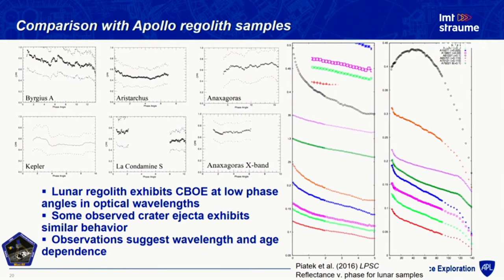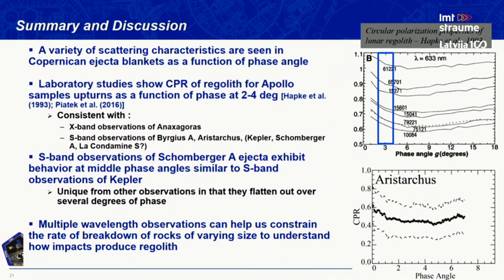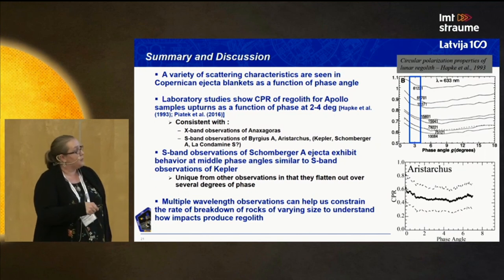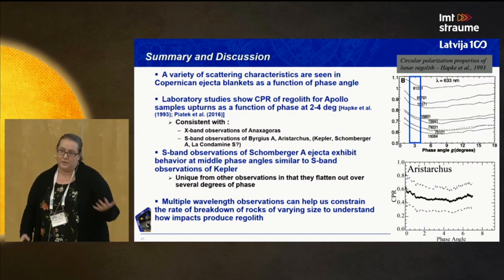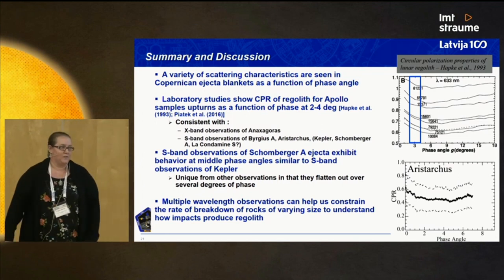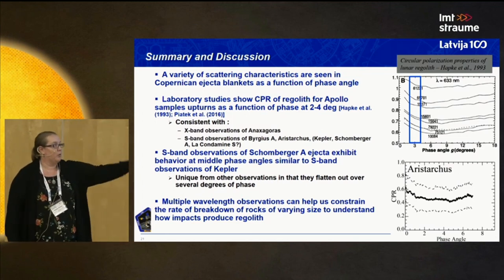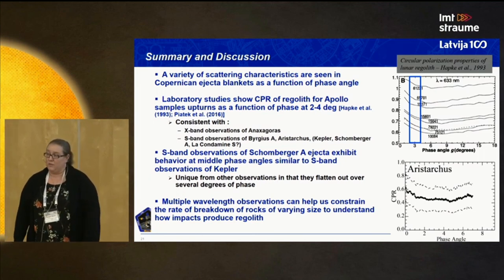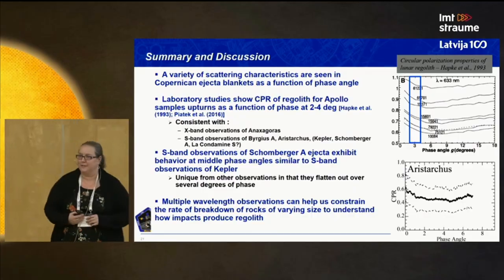So basically, we're seeing a variety of possible opposition effect-type behaviors in radar data, and this is the first time this has been done at the moon. We're working to understand whether it's the same sort of thing we're seeing in optical wavelengths or something different, and how it can help us put constraints on the ages of these craters. Having multiple wavelengths for different craters we think will help a lot with that — and that's what Munir-F is up to right now. Thank you.